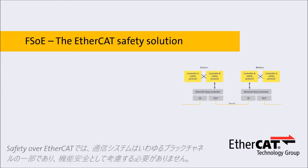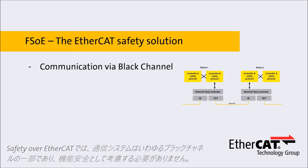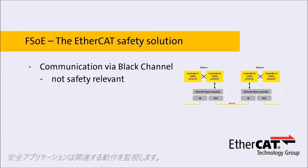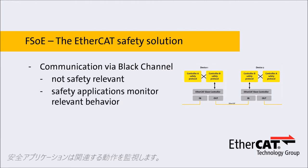With Safety over EtherCAT, the communication system is part of a so-called black channel, which is not considered to be safety relevant. The safety applications monitor the relevant behavior.